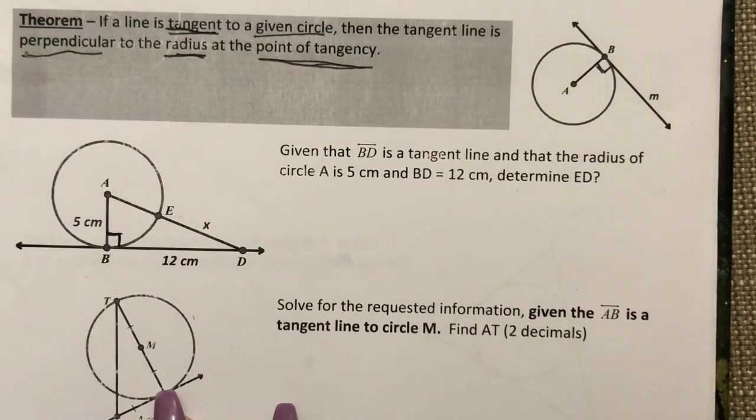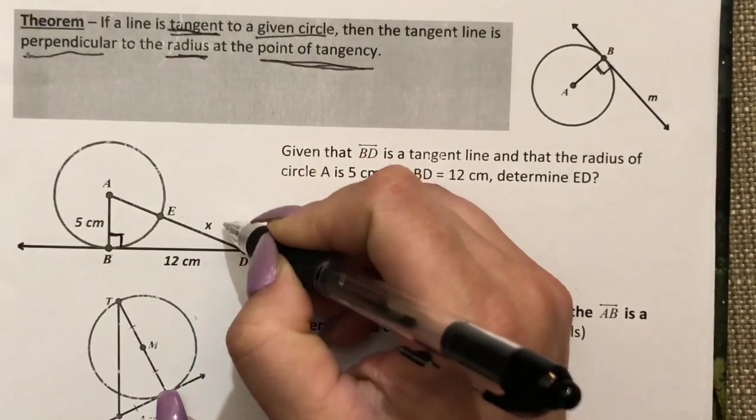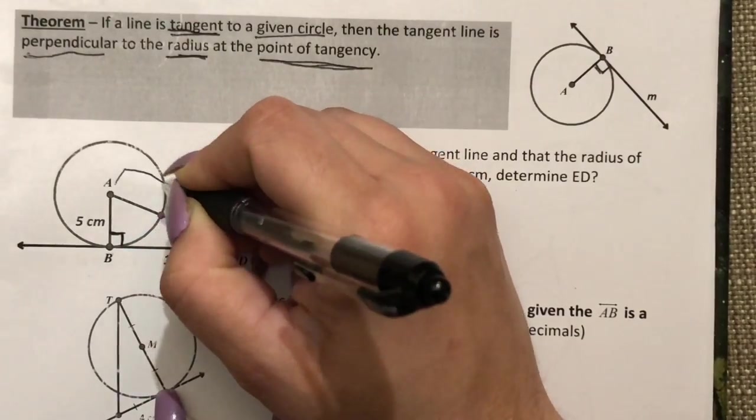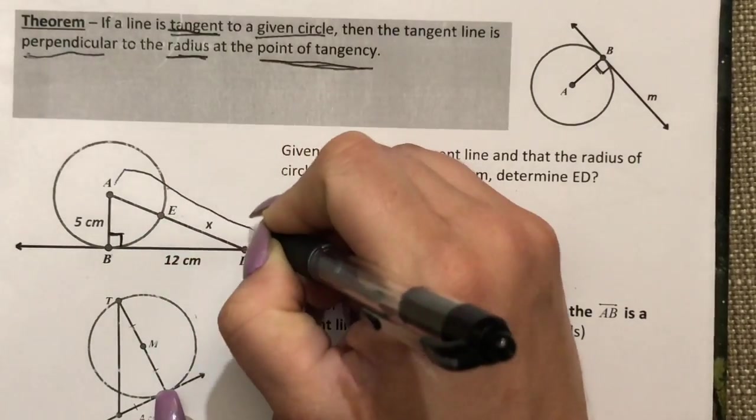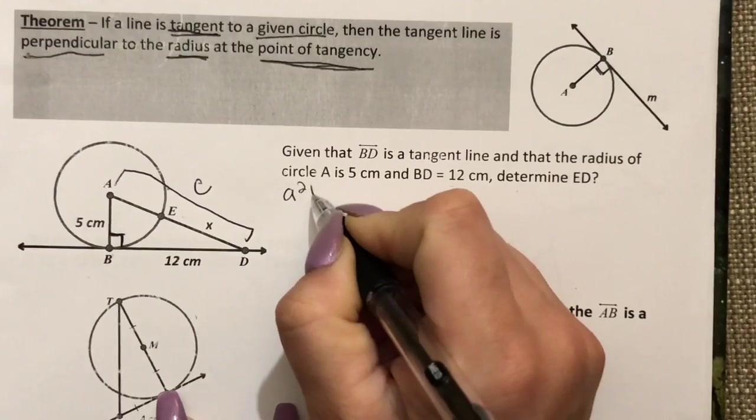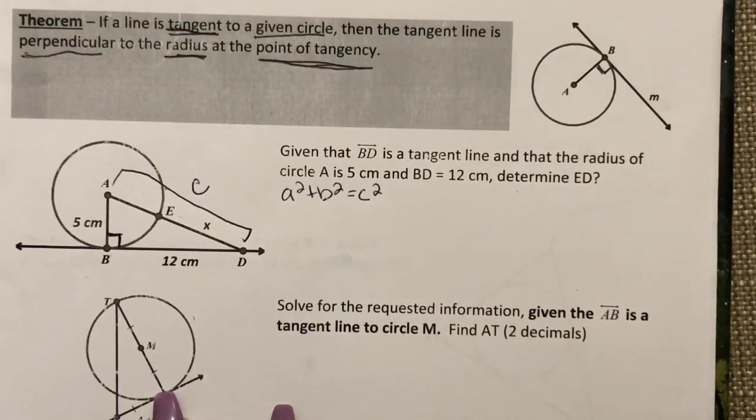Once I label the triangle I see that it's a right triangle which means I can use the Pythagorean theorem to help me answer this question. Now I'm not going to solve just for this missing piece, I'm going to solve for the entire hypotenuse, and we know the hypotenuse is always C.